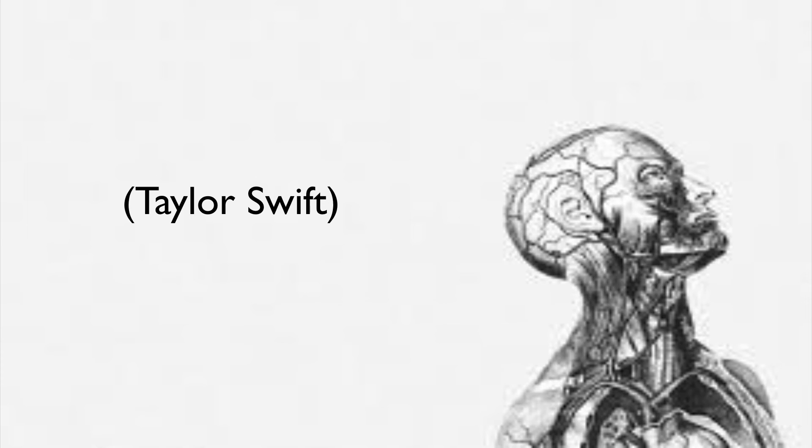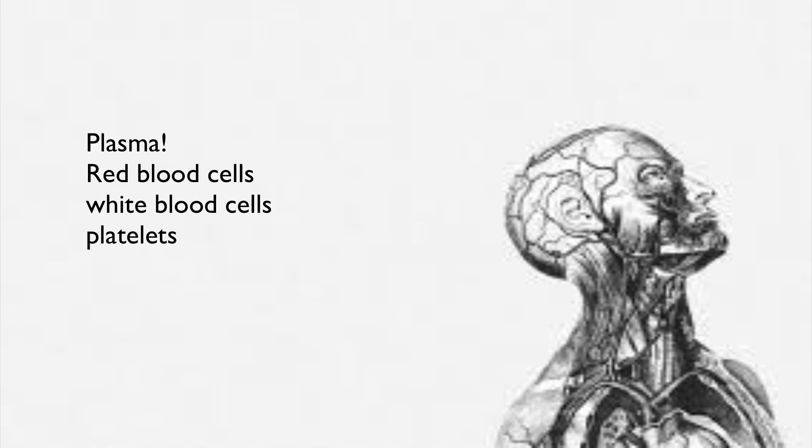Now we got blood — components include plasma, red blood cells, white blood cells, and platelets.